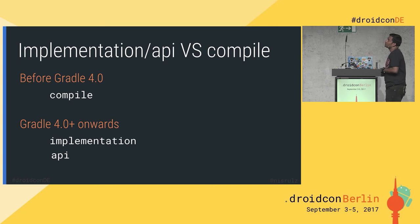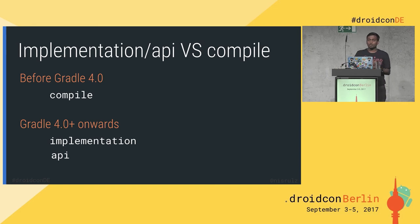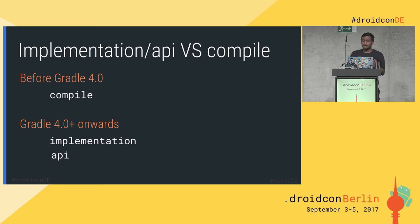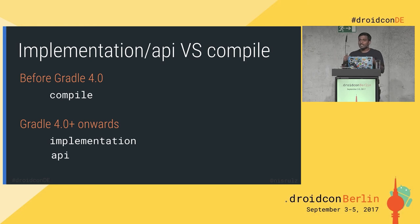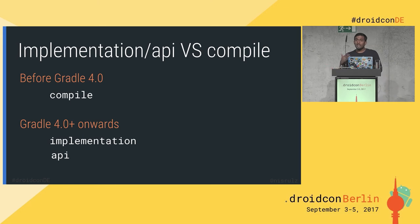Implementation API versus compile — this is fairly new. Up until Gradle 4.0, most builds used 'compile', which is now deprecated. Gradle 4.0 introduced two keywords: 'implementation' and 'API'. If a library module uses 'implementation' to include a dependency, it's only available to the library module — not to the app module. If you use 'API', that dependency is also available to the app module. It's about the scope of where the classes are available.